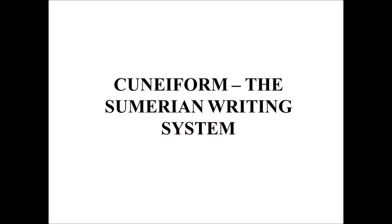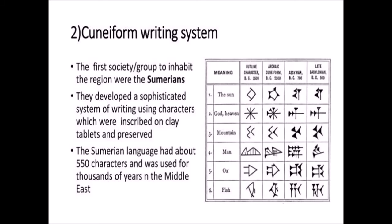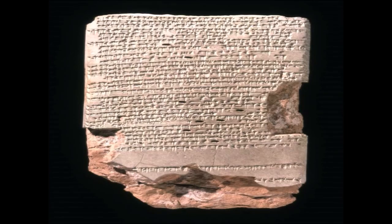Cuneiform is the Sumerian system of writing. The letters are wedge-shaped. These scripts were used for commercial transactions, writing letters, and stories. The clay tablet contains loads of information.